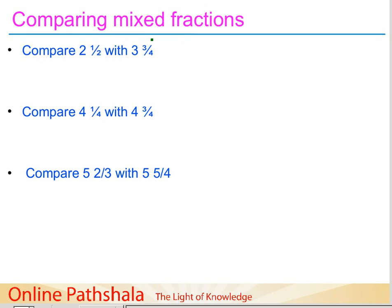Mixed fractions means we have a whole plus a fraction. In this case we have two whole parts and one by two of something, whereas in the other case we have three whole parts and three by four of it — so it is whole and part, whole and part.